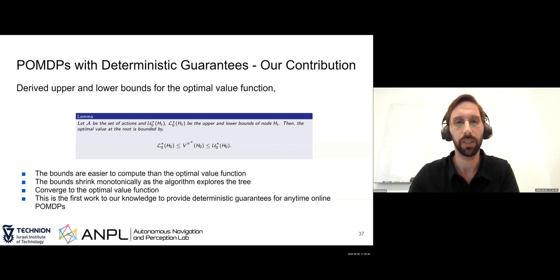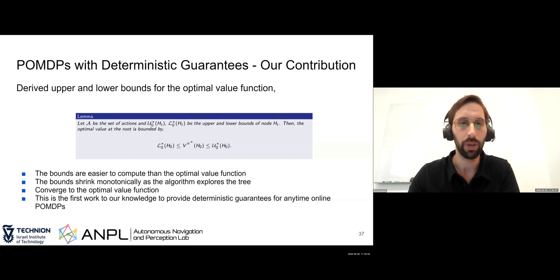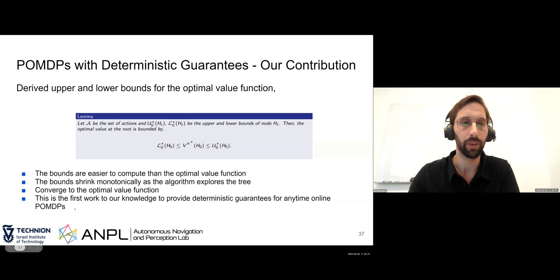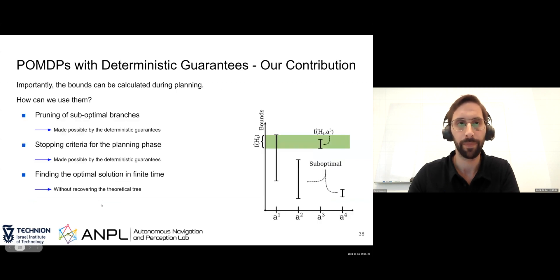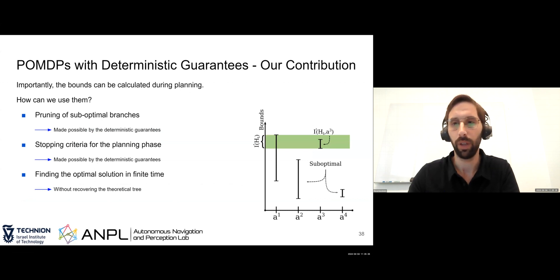We derived lower and upper bounds for the optimal value function. These bounds are relative to the optimal value function — a strong theoretical contribution — and are easier to compute than the optimal value function itself. They have desirable properties: they shrink monotonically as the algorithm explores more of the tree, and they converge to the optimal value function (when lower bound equals upper bound, we have reached optimality). To the best of our knowledge, this is the first paper to provide deterministic guarantees for any-time online POMDP solvers.